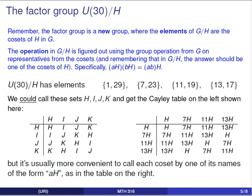Looking at this factor group, you'll notice diagonal stripes in the Cayley table. In fact, this factor group is a cyclic group of order 4, which is interesting because U(30) is not a cyclic group — the maximum order of any element in U(30) is 4, even though there are 8 elements in U(30). So it's notable that this factor group turns out to be cyclic.